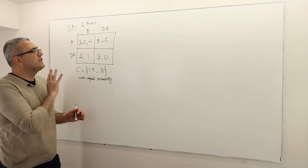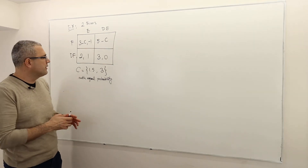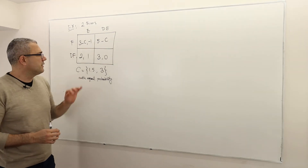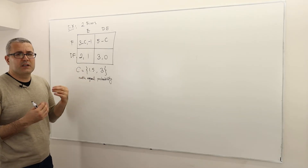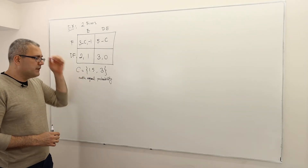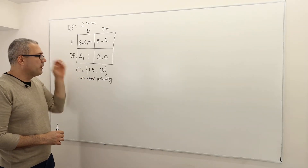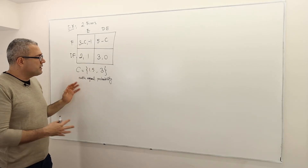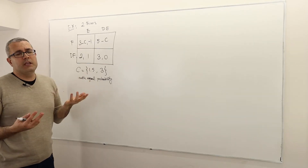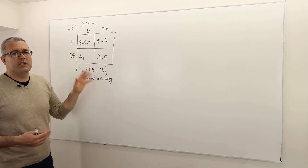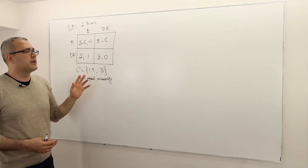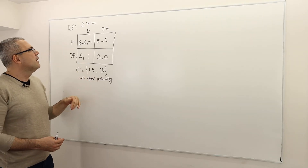Okay guys, now the same example. The only difference is that the values of C are different. C is either 1.5 or 3. For simplicity, I'm going to assume that both of them are equally likely, so one-half probability is 1.5 and one-half probability is 3.